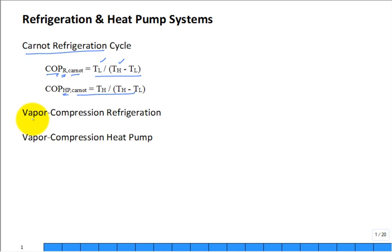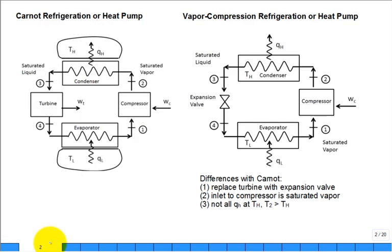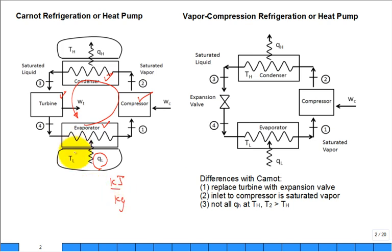We're going to talk about the vapor compression refrigeration and vapor compression heat pump cycle — the practical Carnot, what's actually implementable. In review, we had four components: compressor, condenser, turbine, evaporator. The flow of the refrigerant was through each component operating steady-state. We had heat pick up in the evaporator into the working fluid, Q_L in kilojoules per kilogram of refrigerant, coming in at T_L. Likewise, rejecting heat out of the cycle, Q_H at T_H.